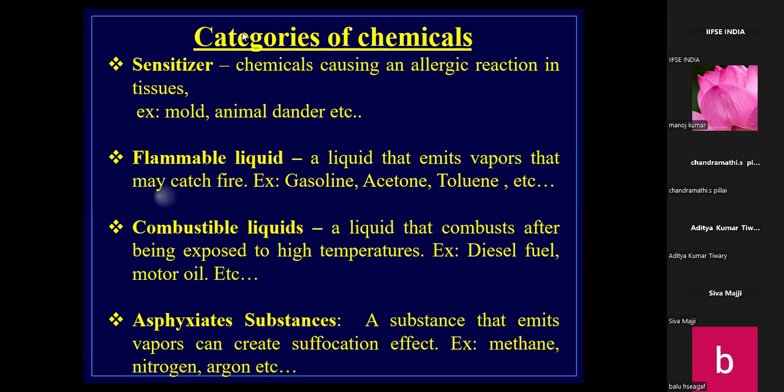Combustible liquids are liquids that combust after being exposed to higher temperatures. The difference between flammable and combustible is that flammable liquids emit vapors that catch fire readily, whereas combustible liquids require higher temperatures to ignite. Among diesel, petrol, and kerosene, petrol is the most highly flammable.